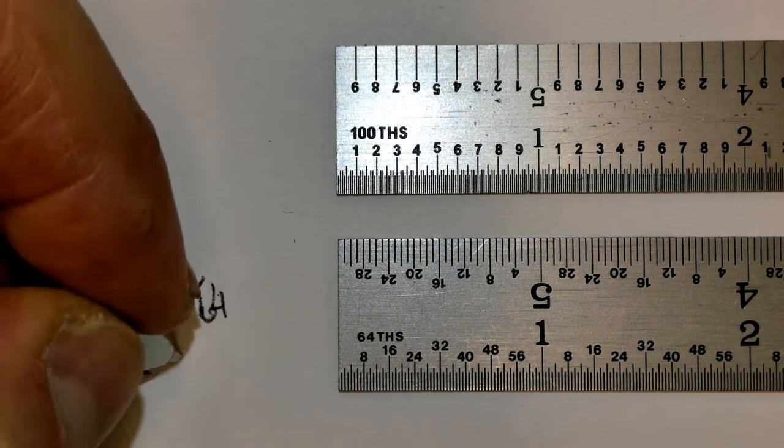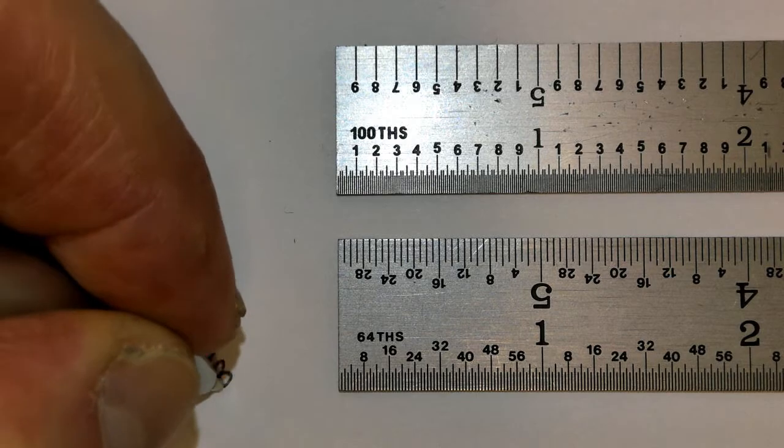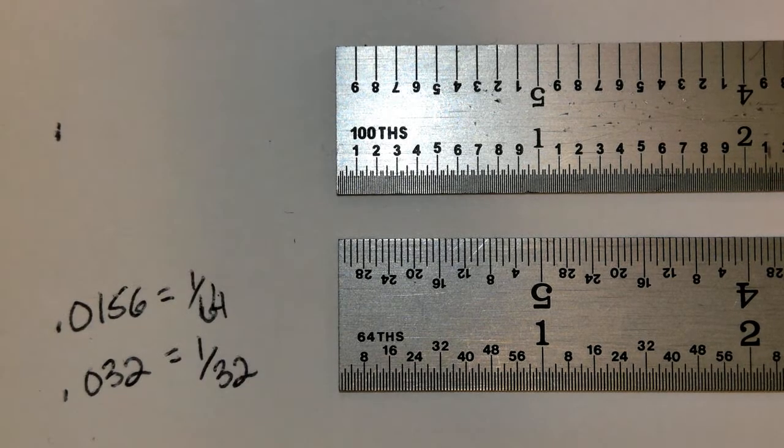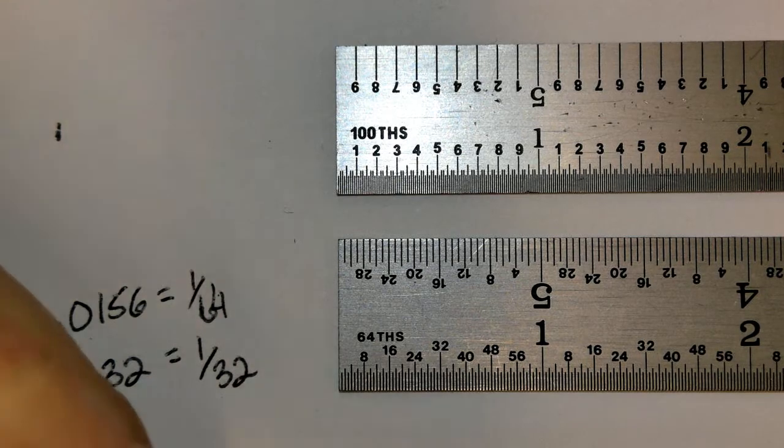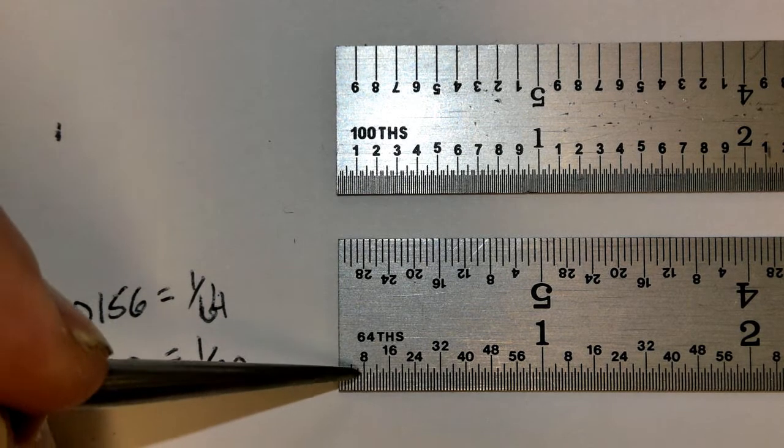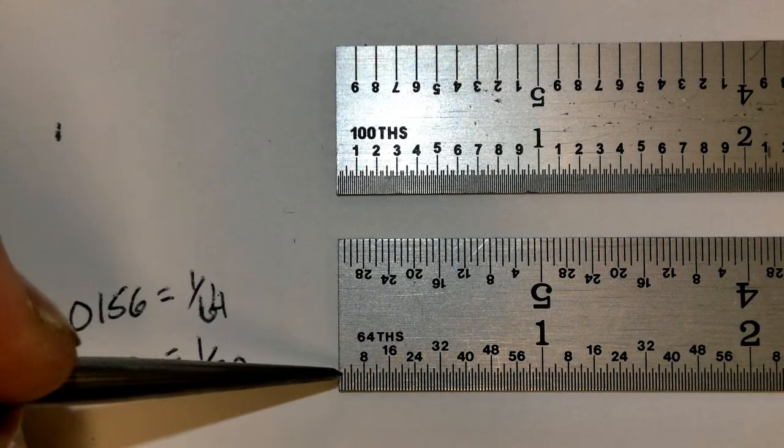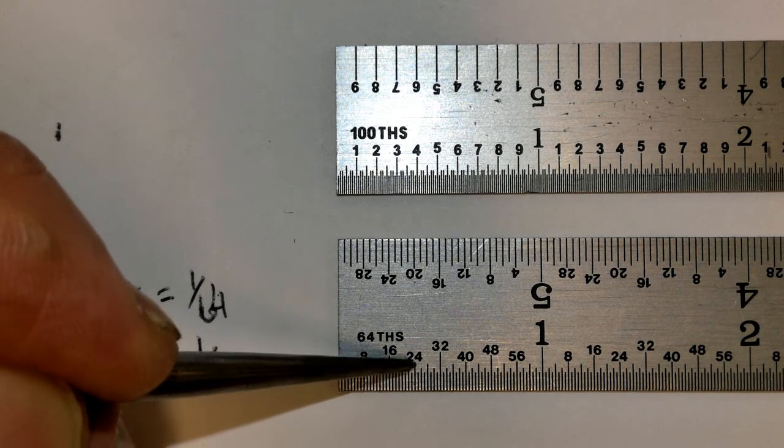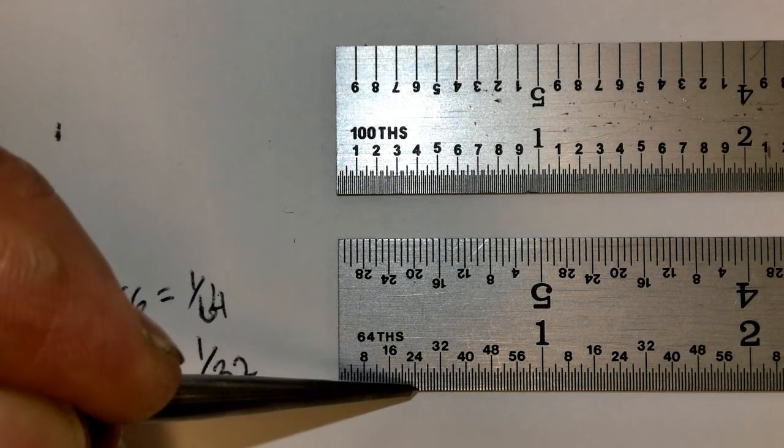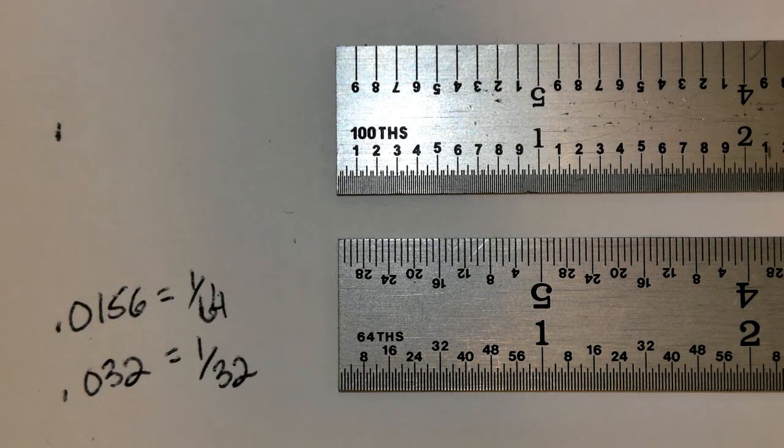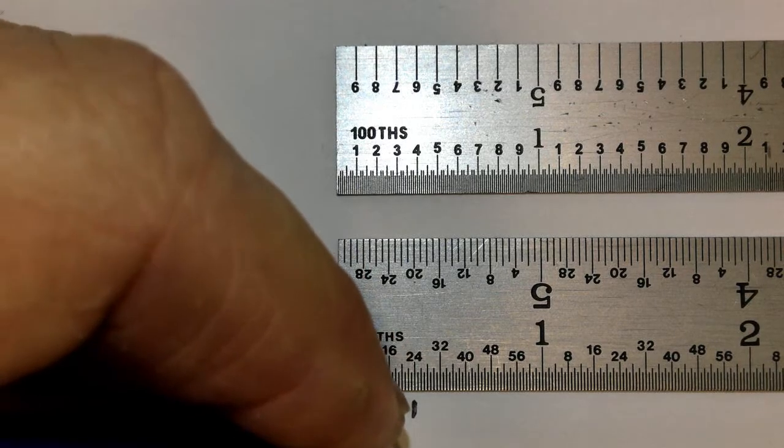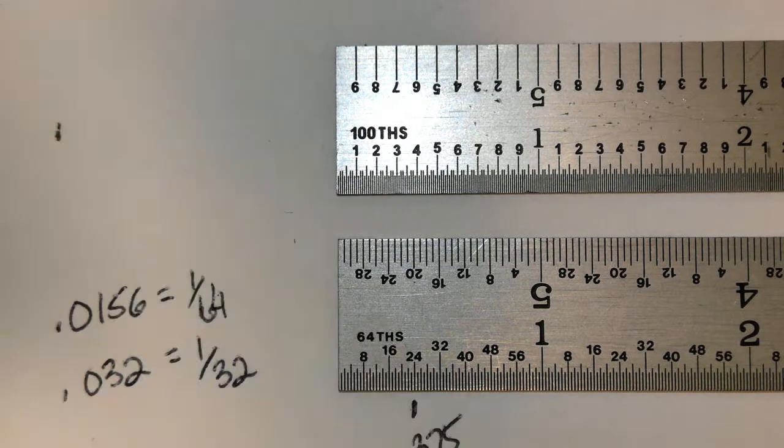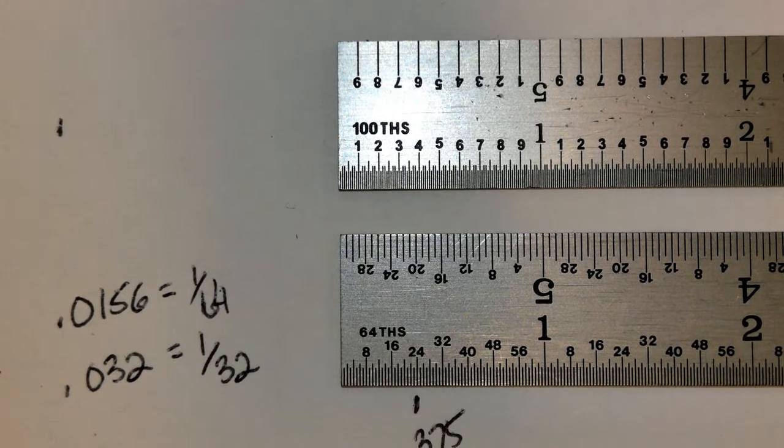As we go through there, we can look using the fractions. We've got a half inch here, 24. If you take 24 and divide it by 64, right here on this 24 line, it would give you the decimal equivalent of three-eighths of an inch. So right here is 0.375.